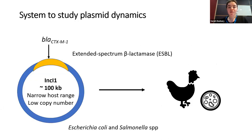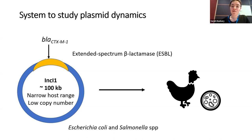The system we focused on to study plasmid dynamics was the chicken gut microbiome, because in the Netherlands resistance genes have been described as particularly prevalent within the chicken gut and across a range of other livestock animals. The extended-spectrum beta-lactamases (ESBLs) are involved in antibiotic degradation and confer resistance to a whole range of beta-lactams, including cefotaxime.